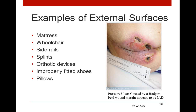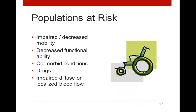NPUAP references external forces that contribute to pressure ulcer development — mattresses, wheelchairs, side rails, splints, orthotic devices like AFOs, ill-fitting shoes, and even pillows not placed or repositioned correctly. Who's at risk? Certainly our impaired or decreased mobility patients — anyone with decreased functionality who can't sense or change position easily. Comorbidities such as cardiac, respiratory, and kidney disease contribute. Anything impairing hemodynamic stability increases risk, as do drugs and impaired localized blood flow, as in the diabetic patient or patient with peripheral vascular disease.